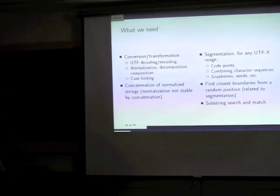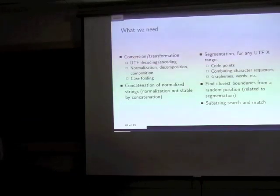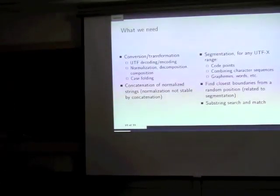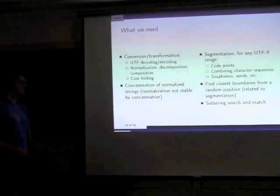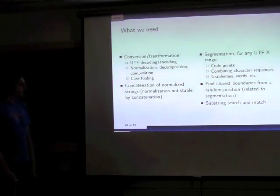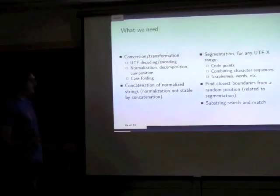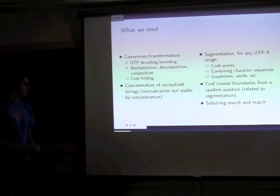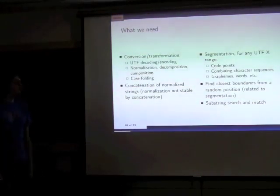What we really need for Unicode can be categorized into two things: converting text (transcoding between character sets, normalization, case transformation) and segmentation (iterating through code points, graphemes, words). We want to find the closest word boundary or code point boundary from a random position in a string, and to search for substrings in a larger string for matching and parsing.